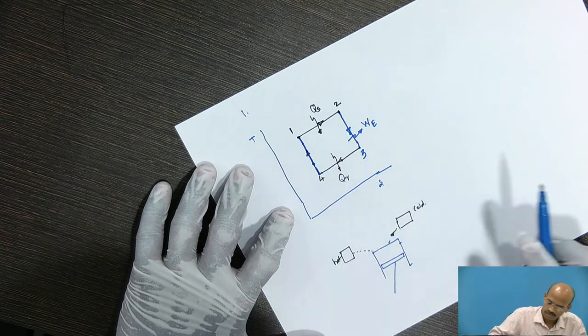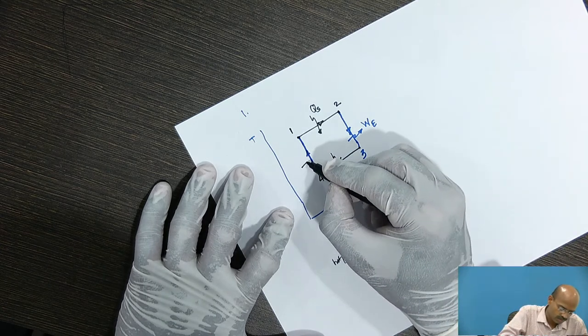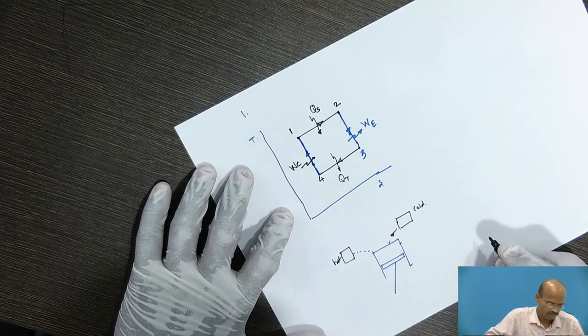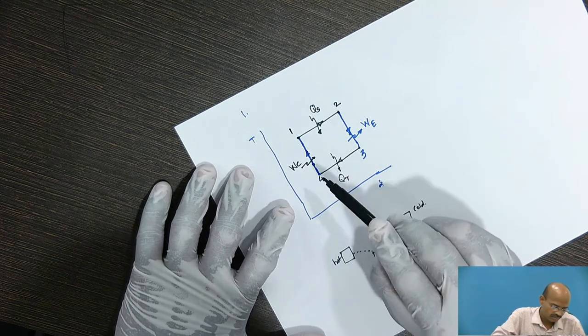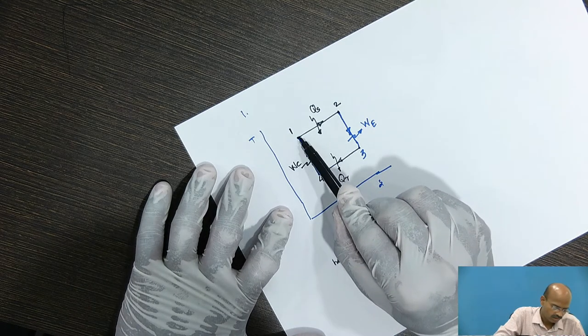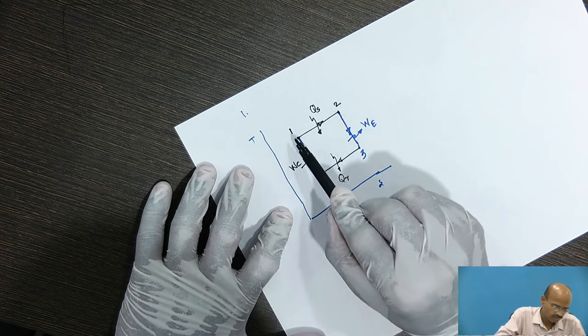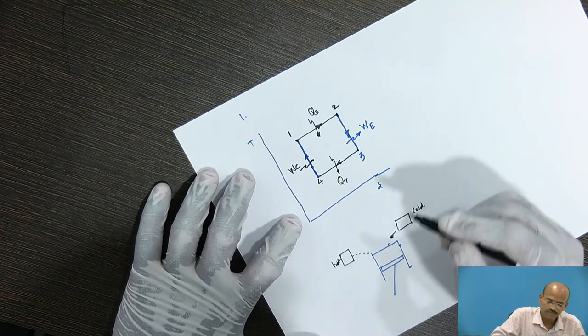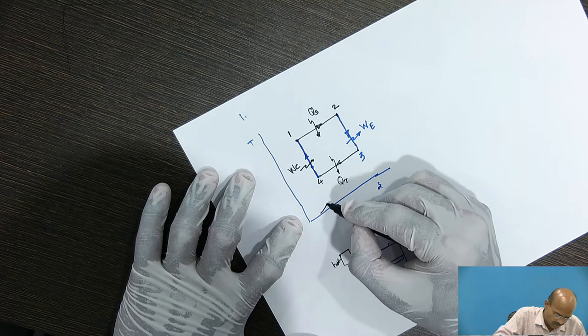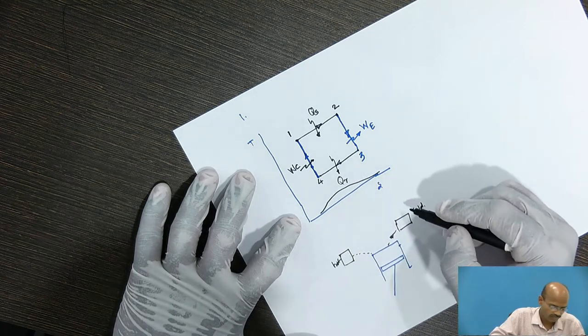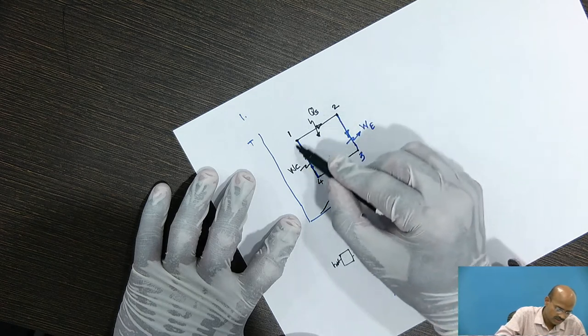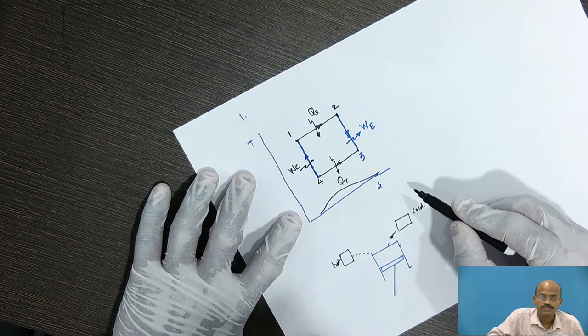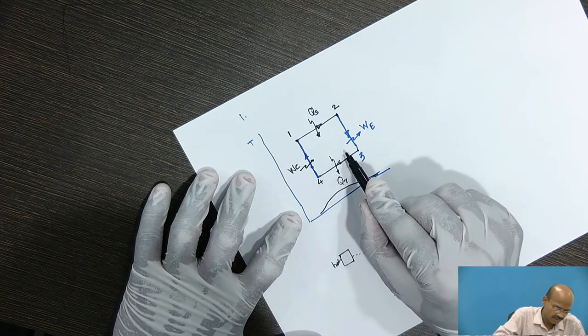Obviously, some amount of work is to be given and that is represented by WC. So the Carnot cycle is from 1, 2, 3, 4, 1 and the saturation curve is, if we want we can draw the saturation curve will be somewhere here. So what is observed? The working fluid is in the single phase. It does not undergo the phase change. That is why this is called single phase Carnot cycle.